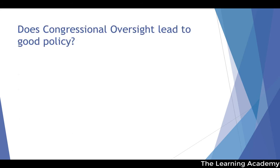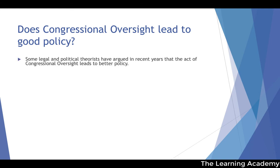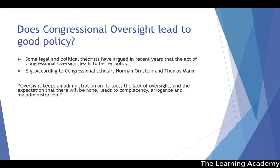One argument for advocating a healthy amount of Congressional Oversight is that it leads to good policy. Some legal and political theorists argue that Congressional Oversight leads to better legislation because it allows for better scrutinizing of policies. According to Congressional scholars Norman Allstein and Thomas Mann, 'oversight keeps a presidential administration on its toes. The lack of oversight and the expectation that there will be no oversight leads to complacency, arrogance, and maladministration.'